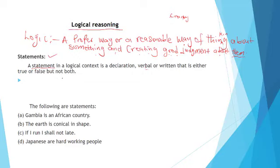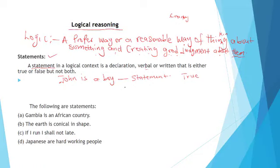For example, 'John is a boy' — this is a statement. I call it a statement because you can look at John and check the features of a boy. After looking at him, if John has the features of a boy, then the statement is true. But if John has the features of a lady, and even he himself confirms he's a girl, then the statement 'John is a boy' becomes false. It is classified as a statement because the certainty of this sentence can be verified.